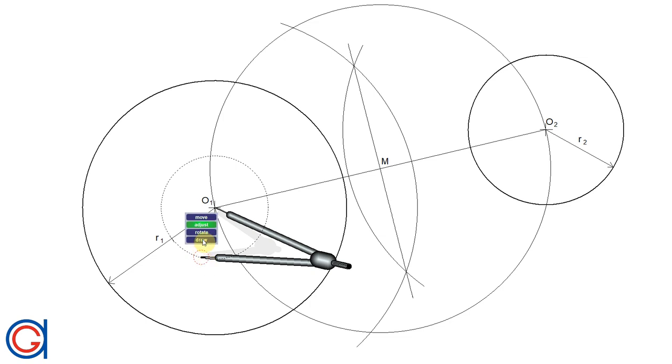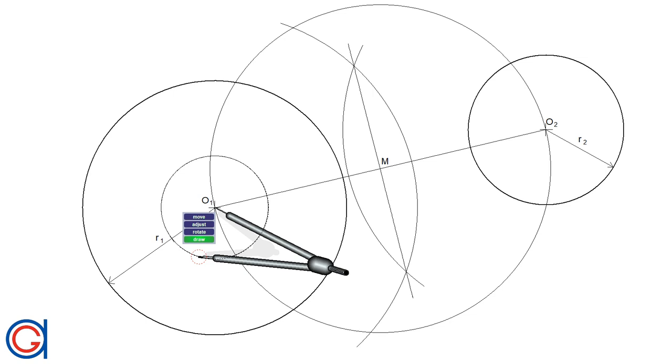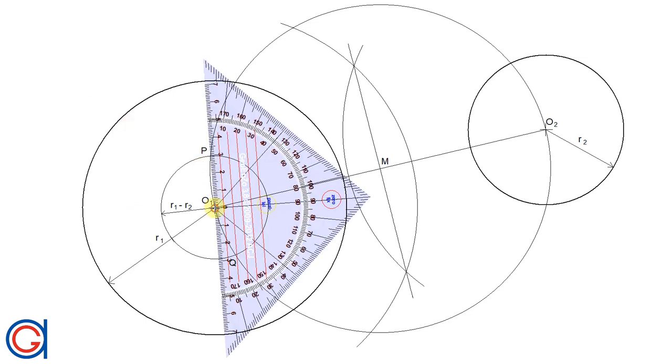Now setting our compass on radius R1 with length R1 minus R2, we're going to draw another circle, and as you can see with the red dots, it cuts our previously drawn large circle at two points.